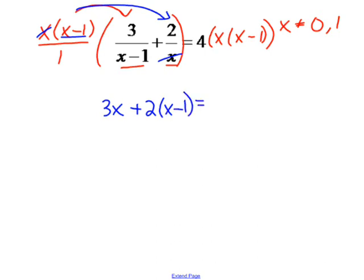For the second one, it's not a fraction, so nothing cancels. I'm going to multiply 4 times x first, and then I want to multiply the result times x minus 1. Now, we'll simplify.